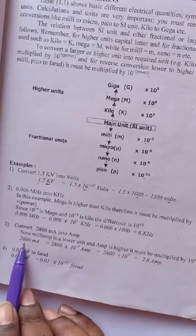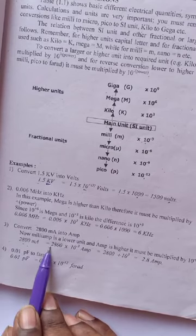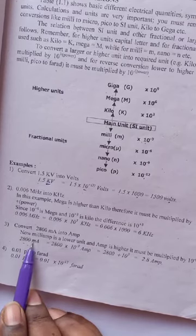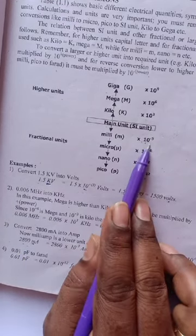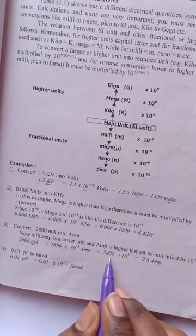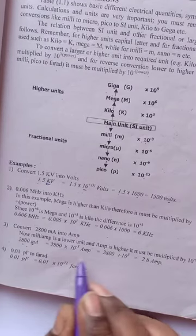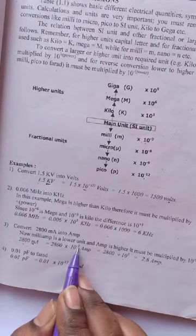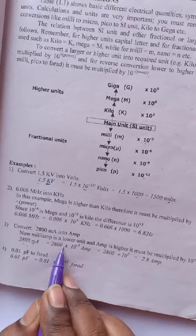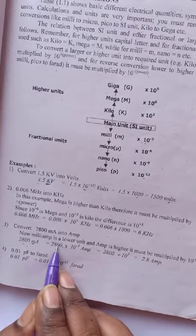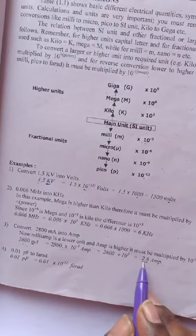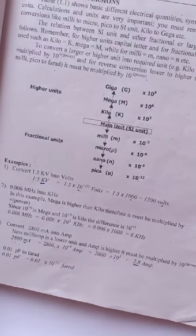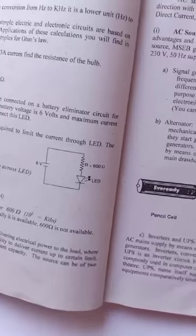Similarly, 2800 milliampere equals 2800 into 10 raised to minus 3 ampere. In place of m you write 10 raised to minus 3. You shift the decimal point three places to the left, giving 2.8 ampere. So 2800 milliampere equals 2.8 ampere. These are the unit conversions you should know.